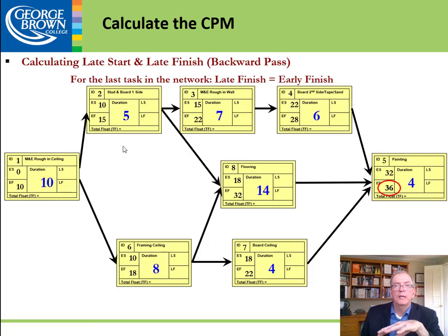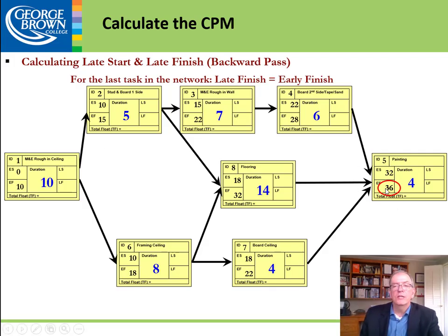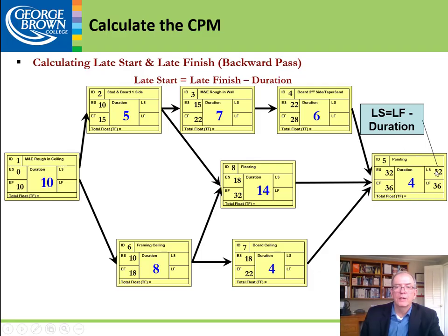Once the forward pass is done, we do the backward pass. With the backward pass complete we can figure out which activities are on the critical path — the ones with zero float — and how much float the other activities have. The last activity is 36 days, which must be on the critical path, so 36 becomes the late finish. We then work backwards with subtraction — the forward pass is addition, the backward pass is subtraction. So 36 minus 4 gives us 32, the latest this activity can start.